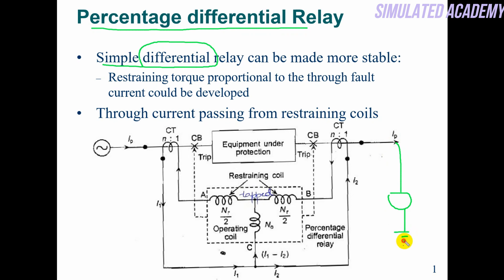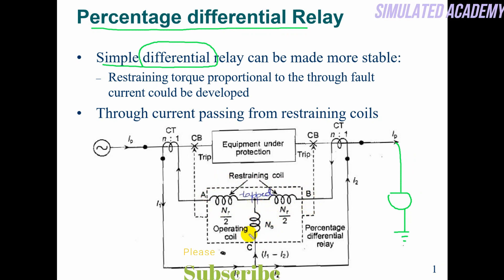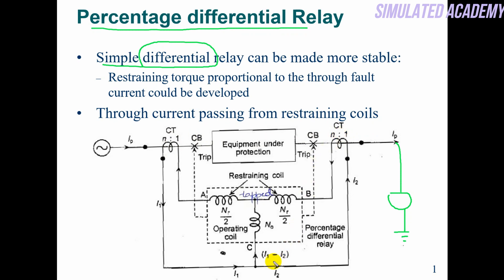This CT number one and this CT number two — these are the restraining coils, which will keep my relay restrained so it does not trip. And this is my operating coil, which will trip my relay. The current passing through it is the difference I1 minus I2 — that is the primary measured current and secondary measured current. This mismatch current passes through the relay. We modify the differential relay into the percentage differential relay by dividing using the turns ratio tapped inside the table.